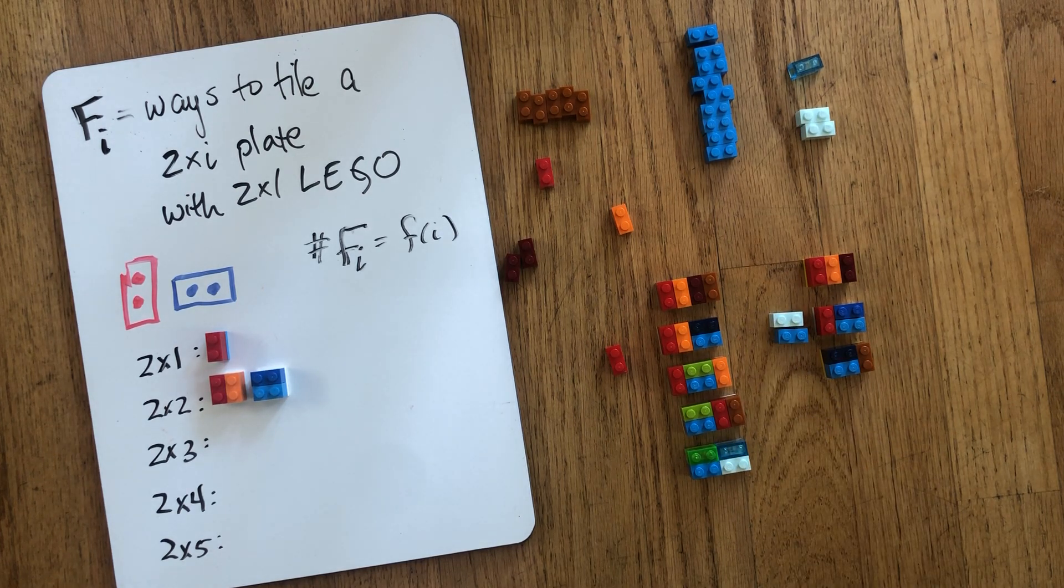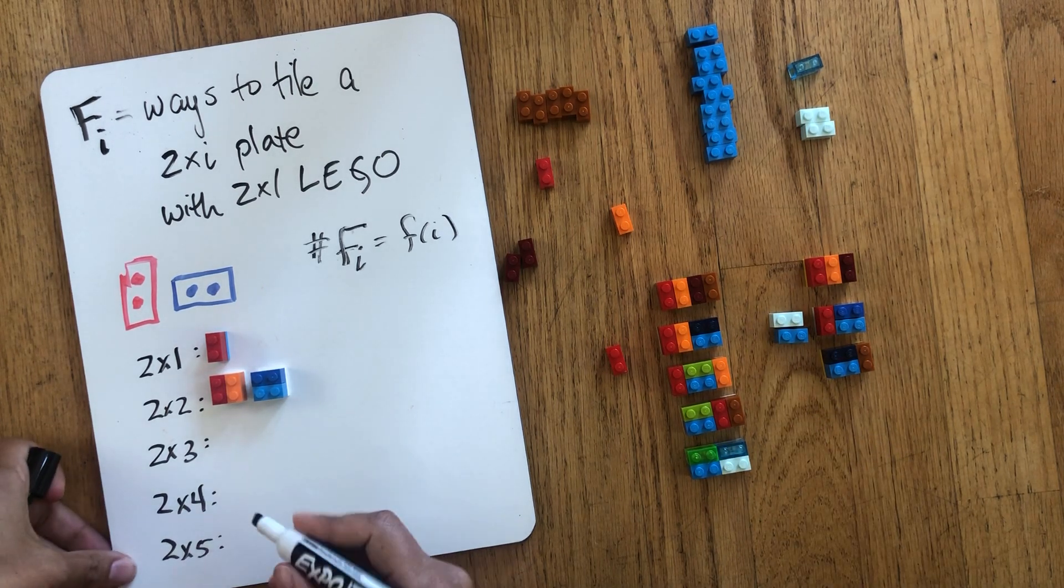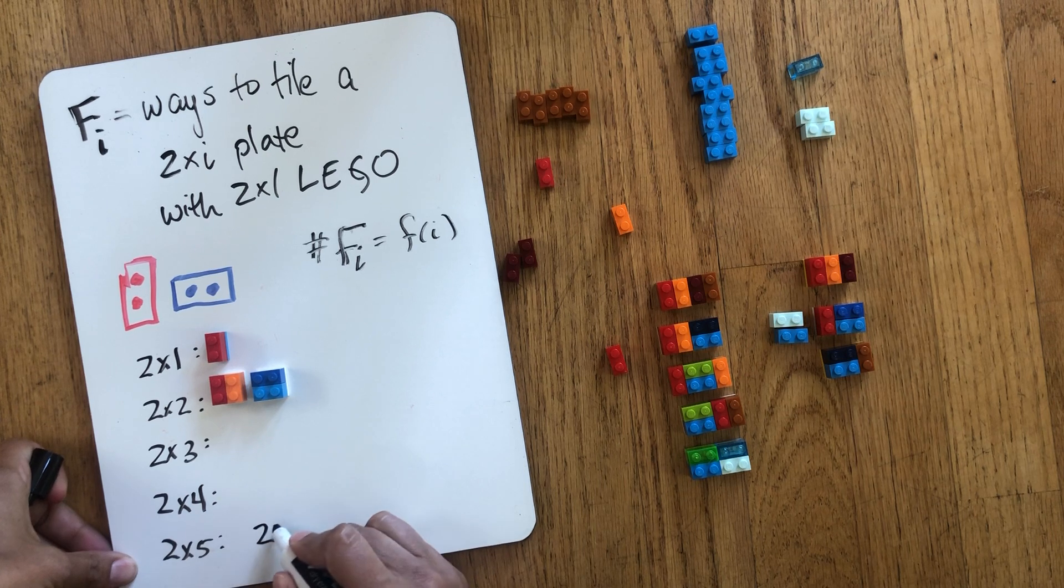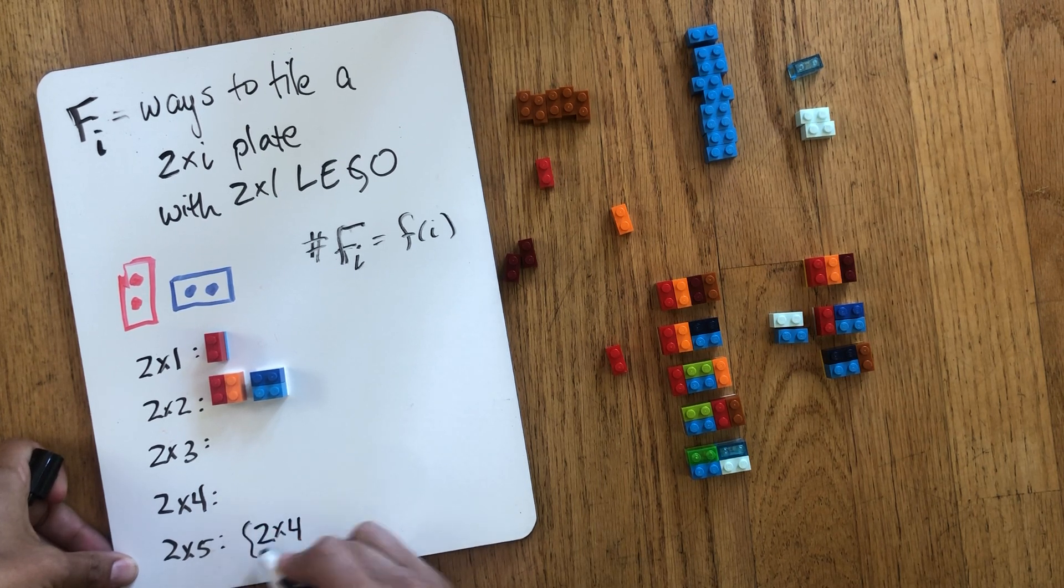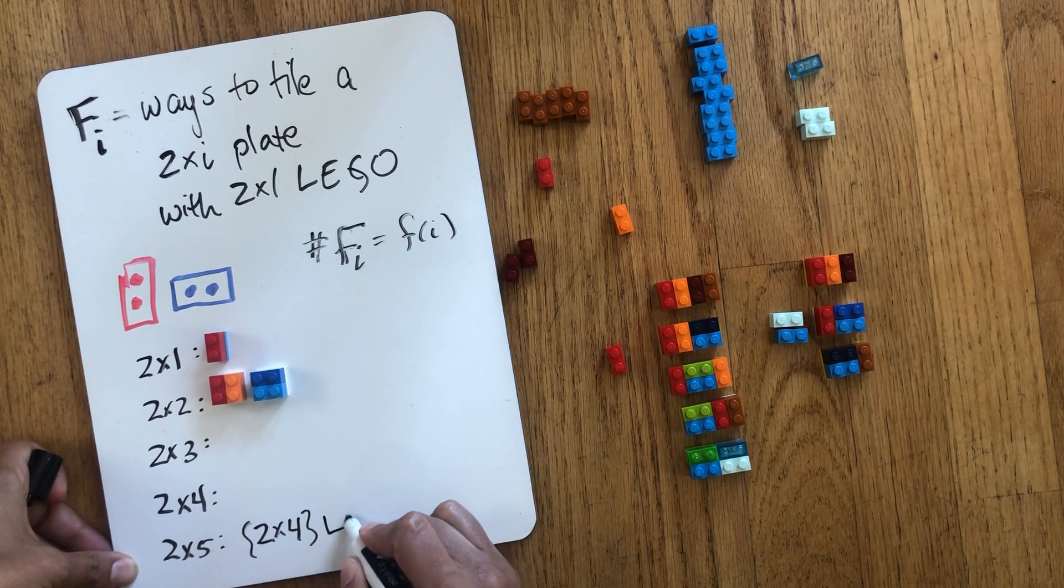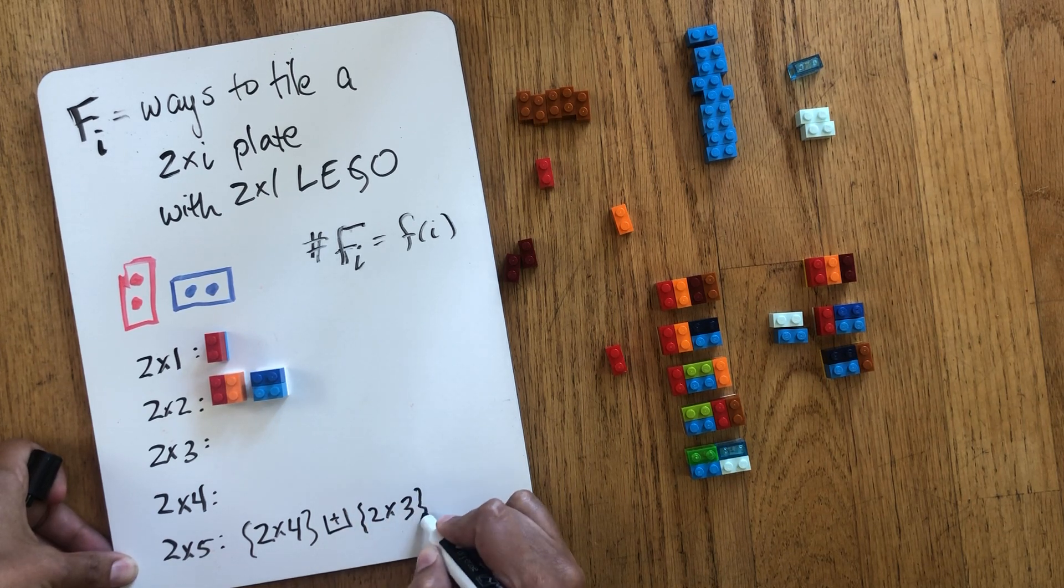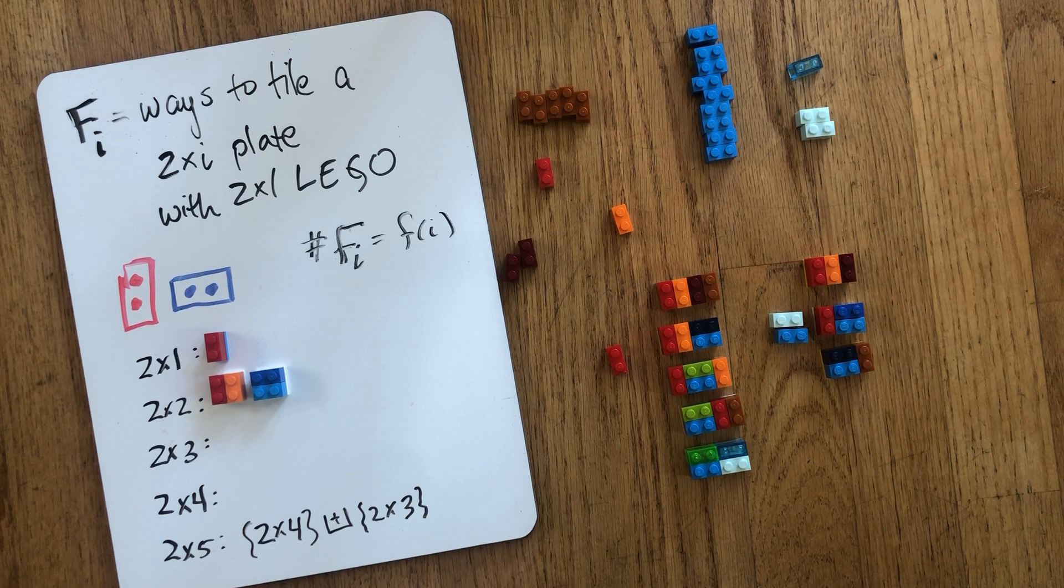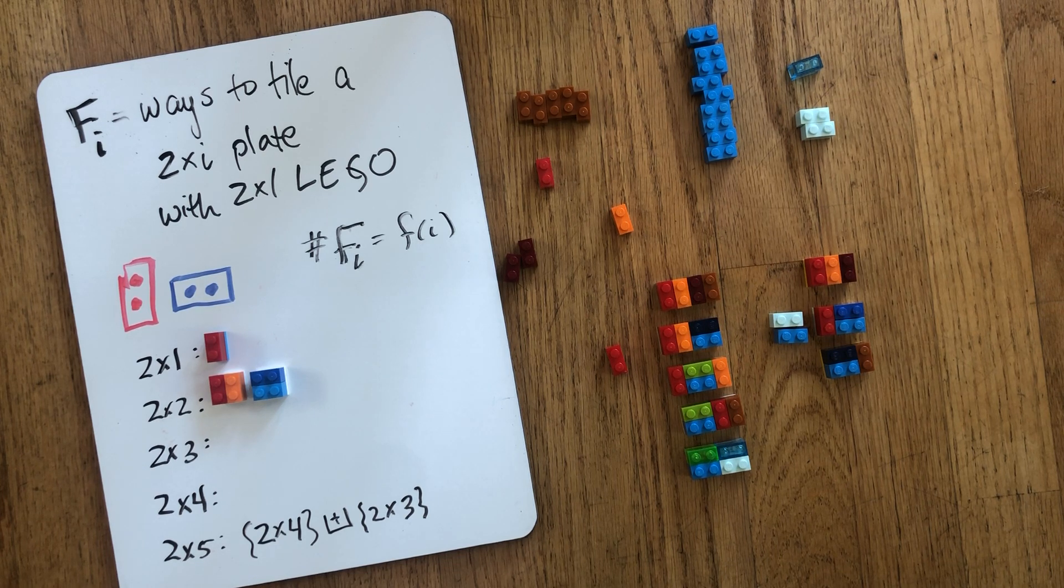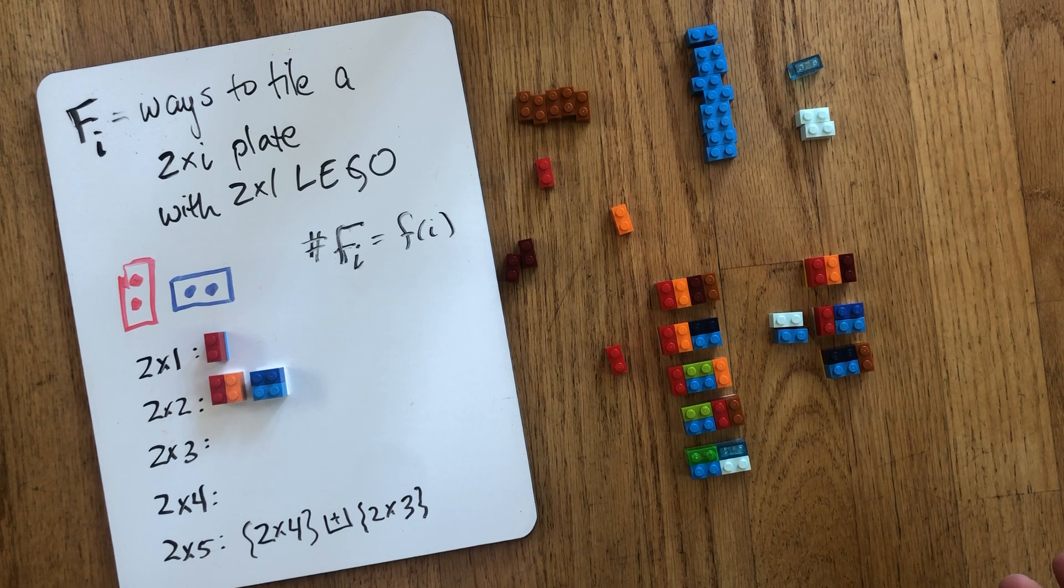So what do I know? Well, I know that two by five, this is actually going to be my solutions to two by four. So it's all of those solutions disjoint union with all of my two by three solutions. And now, instead of constructing more solutions, I've actually come to some understanding of what's happening with my problem. What I've done is I've figured out a recurrence relation.